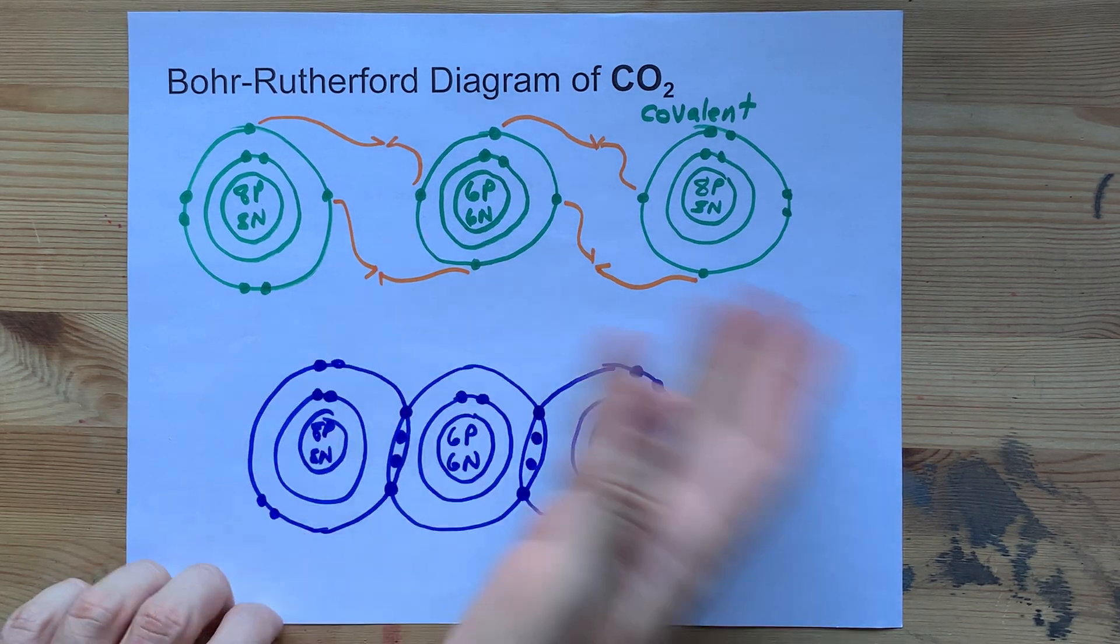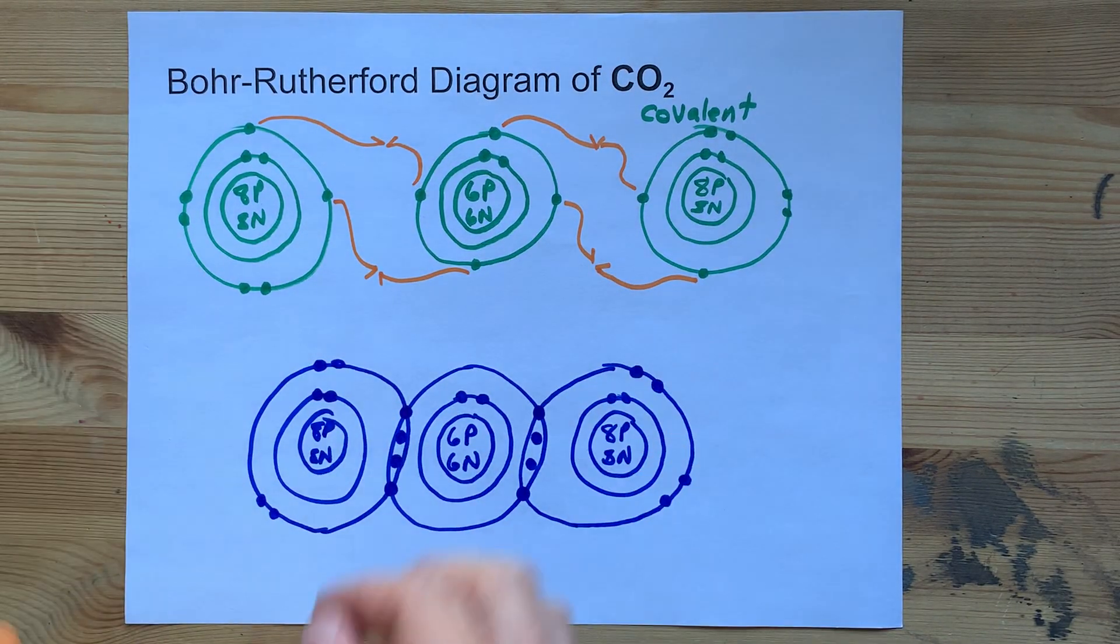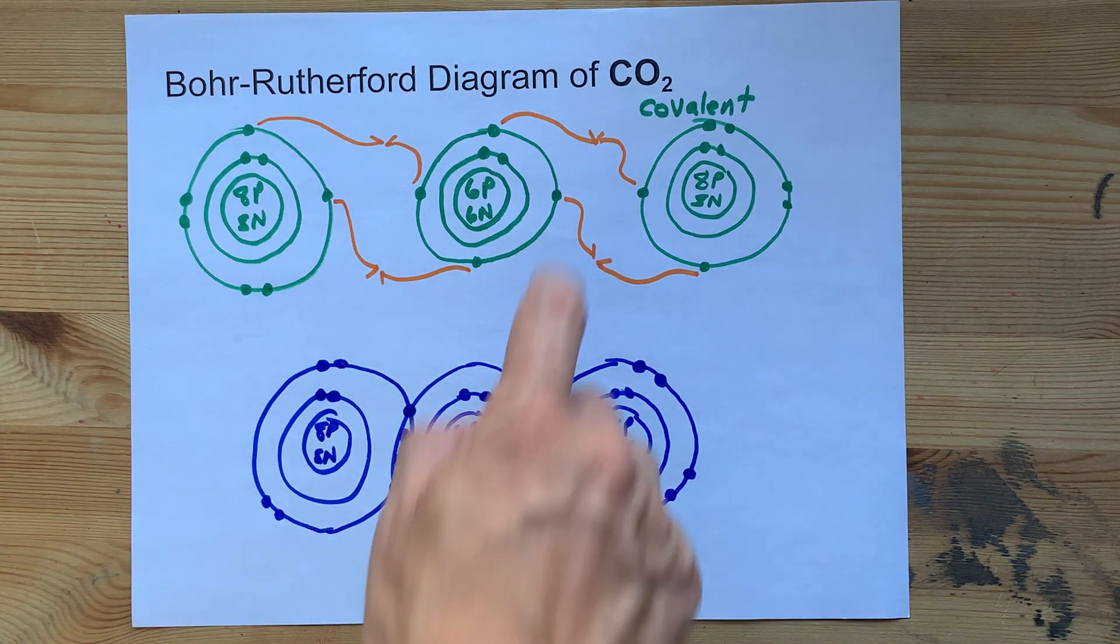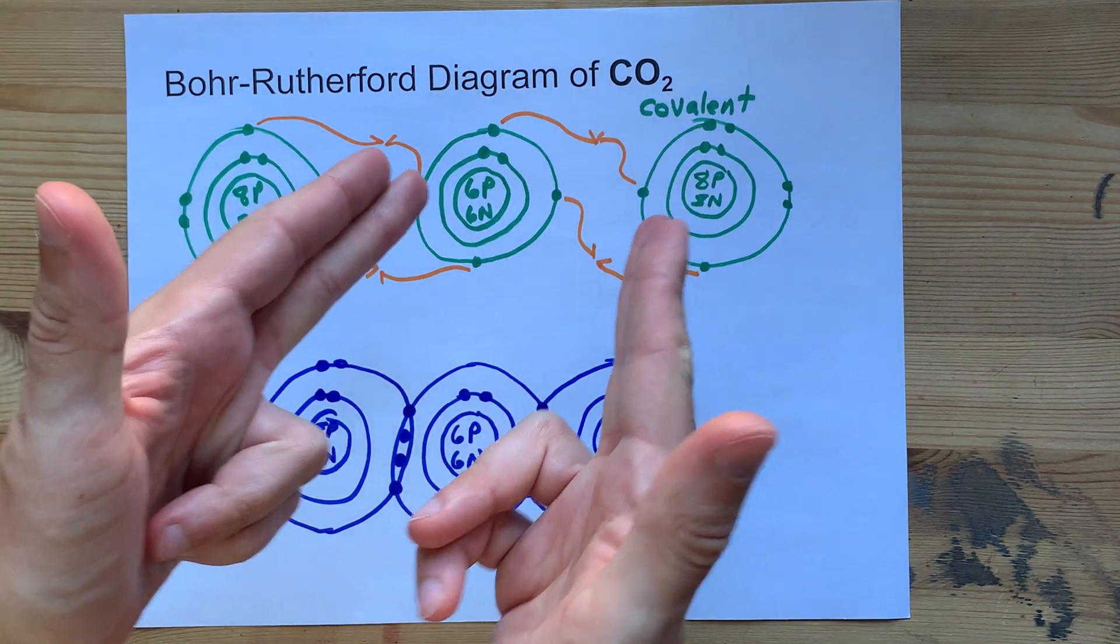This oxygen's the same as that one, so I'm not going to bother counting. Spoiler alert, it's eight. Here's your Bohr-Rutherford diagram for carbon dioxide. Thanks for being here.